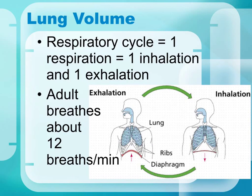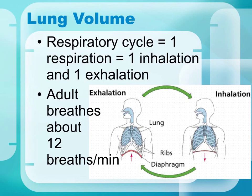The respiratory cycle is one respiration, which equals one inhalation or inspiration and one exhalation or expiration. In a normal adult, the normal rate of respiration is about 12 to 20 breaths per minute. As you get older that number decreases, and when you are younger — babies and children — it is much higher.